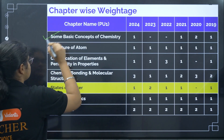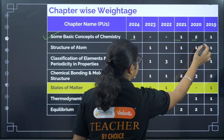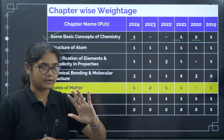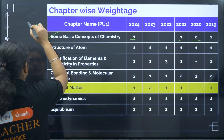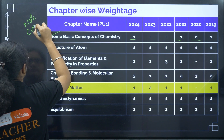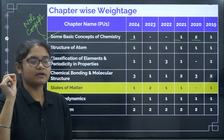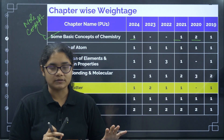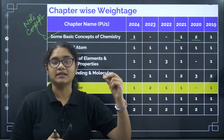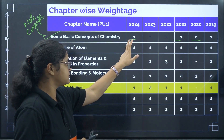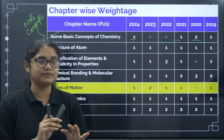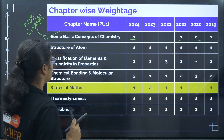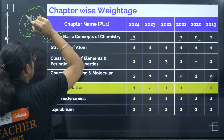First, Some Basic Concepts of Chemistry — only one or two questions were asked in the last six years, so it seems low weightage. However, this chapter contains mole concept, which is used in almost every chapter of chemistry. Without understanding mole concept, you will get stuck in different chapters. So even though it's low weightage, it is my sincere advice to give more focus on this topic and clear your mole concept.